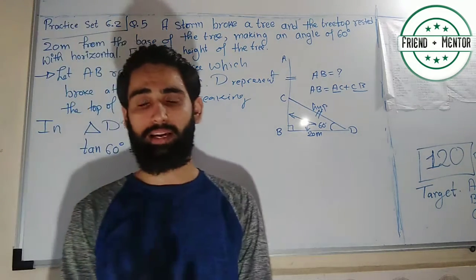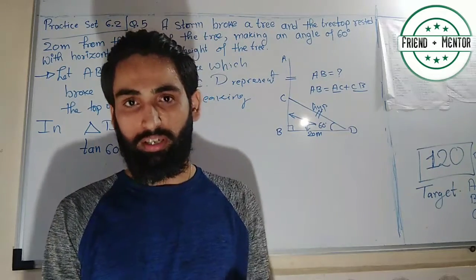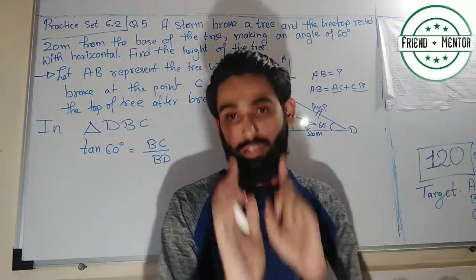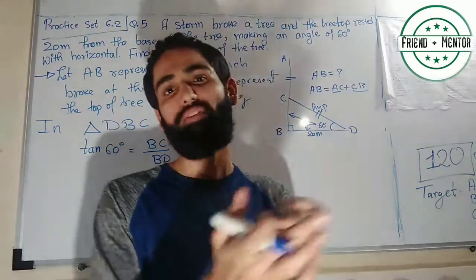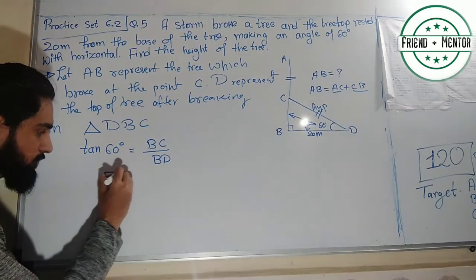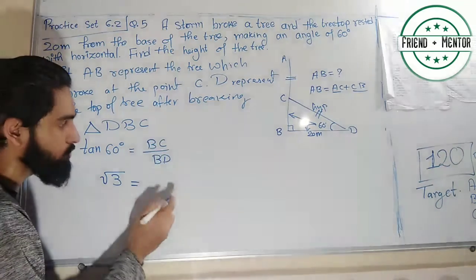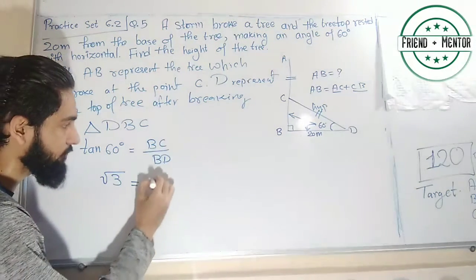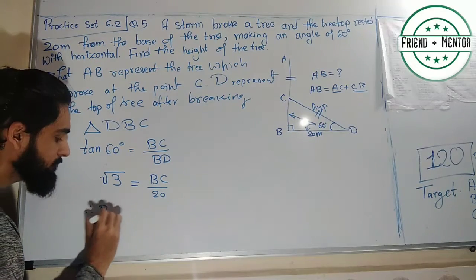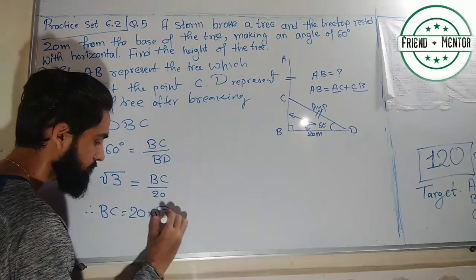Recall the tangent values: tan 0° = 0, tan 30° = 1/√3, tan 45° = 1, tan 60° = √3. So tan 60° = √3 equals BC divided by 20. Therefore BC equals 20√3.